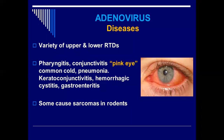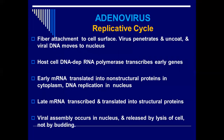The replicative cycle of adenoviruses: the fibers attach to the surface of the cells. The virus then penetrates, uncoats, releases its viral DNA, and this viral DNA moves towards the nucleus. RNA viruses normally replicate in the cytoplasm, while DNA viruses replicate in the nucleus. That's why after uncoating, the viral DNA moves towards the nucleus.